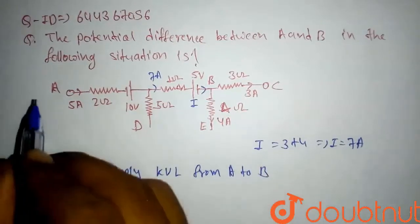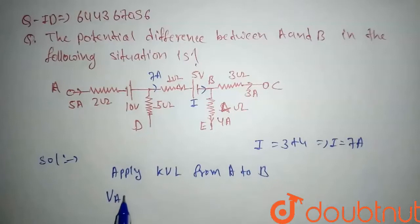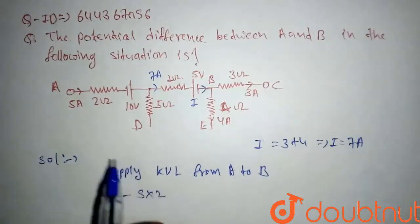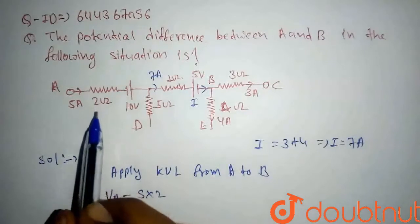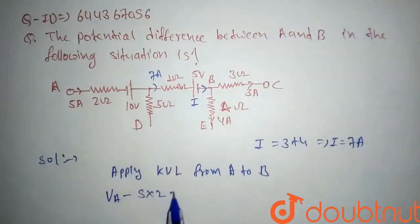So we will see this is potential difference Va minus 5 into 2. So here current is 5 ampere and resistance is 2 ohm, and it will be 10 ohm, 10 volt.